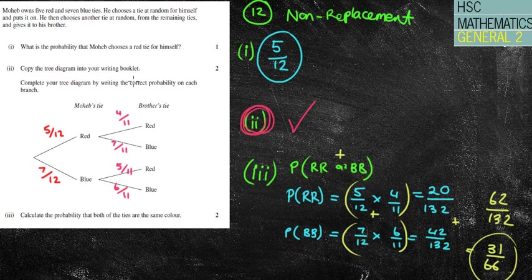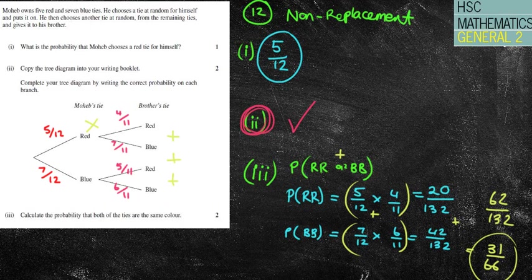I hope this made sense. Tree diagrams can get a little bit tricky. Just make sure you identify whether it's a replacement or non-replacement question — that's a big factor in getting these right. Remember: as you go along the branch, we always multiply; but if you need separate branches, we add them together. Have an awesome day, guys. Make sure you get the questions done, and let me know if you have any questions.